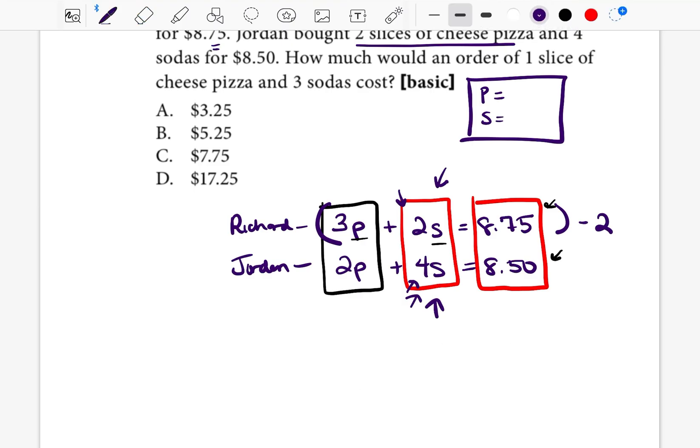We're multiplying everything in that top equation by negative 2. We're not going to try to be geniuses. If you need a calculator, go ahead and use a calculator. The nice thing is that on a lot of these questions, you are allowed to use a calculator. So negative 2 times 3 would be negative 6P. Negative 2 times 2S would be negative 4S. And then in your calculator, 875 times negative 2, that would be negative 1750. Now we're going to bring down the second equation, 2P plus 4S equals 850.